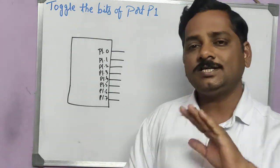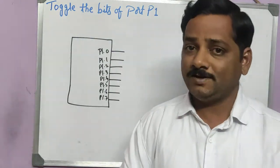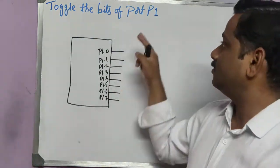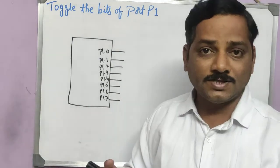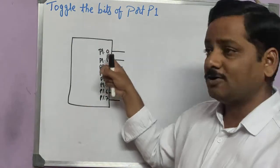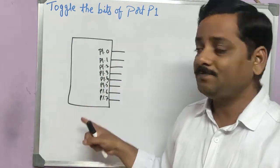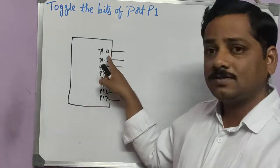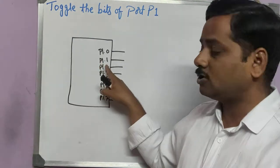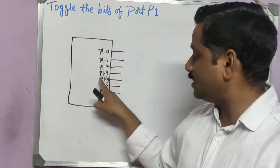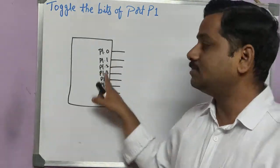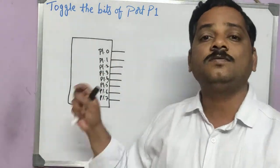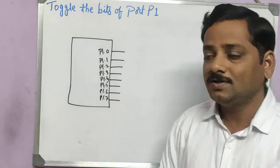Here you need to understand that each port has 8 bits. So port 1 will have 8 bits in it — that's what I have represented here: P1.0, P1.1, and similarly up to P1.7. So these are the 8 bits for port 1.